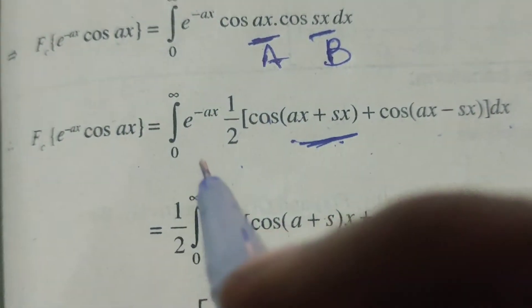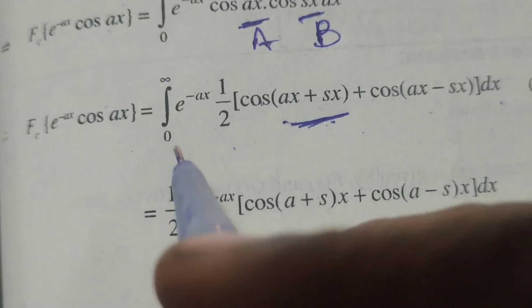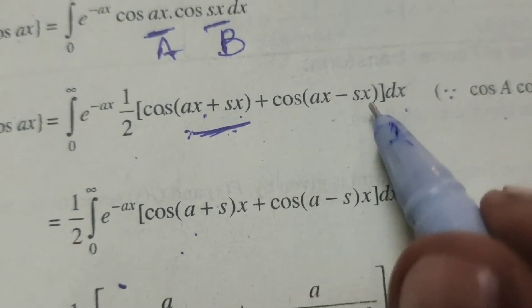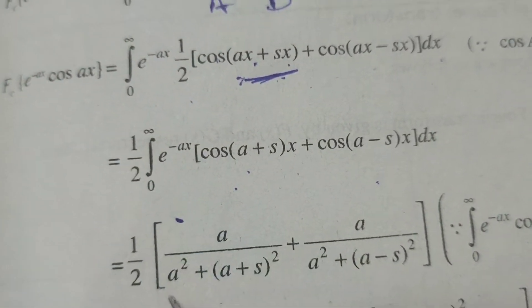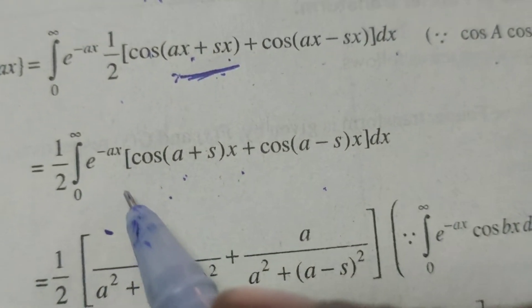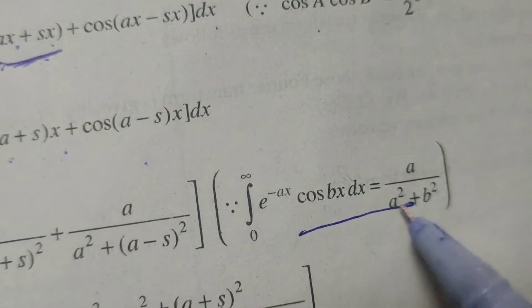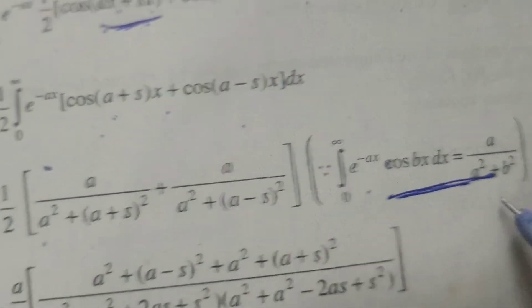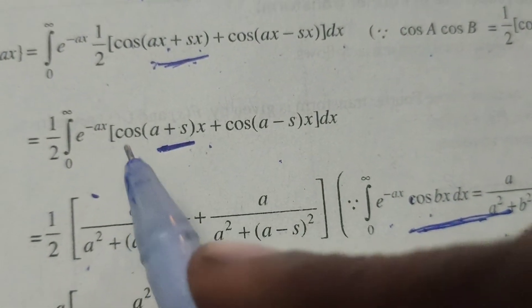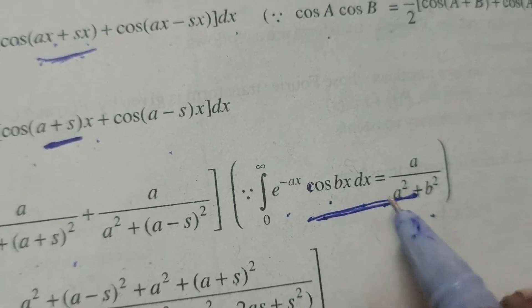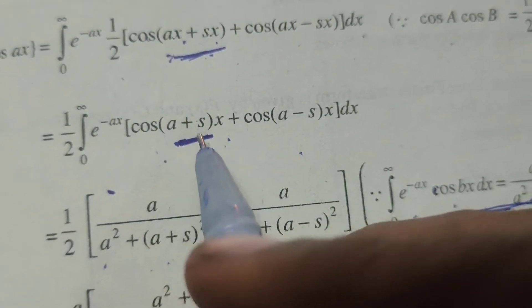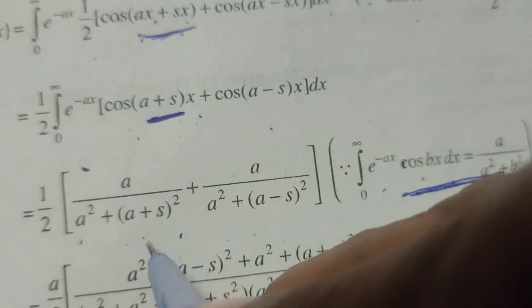Since 1 by 2 is a constant, bring it before the integral. So we get 1 by 2 into integral from 0 to infinity of e power minus ax cos of a plus s into x plus cos of a minus s into x dx. Now applying the standard formula: integral of e power minus ax cos bx dx equals a by a square plus b square. Here b means a plus s, therefore we get a by a square plus a plus s whole square.